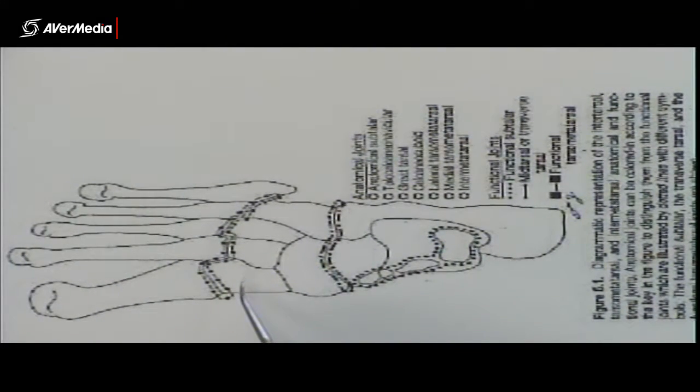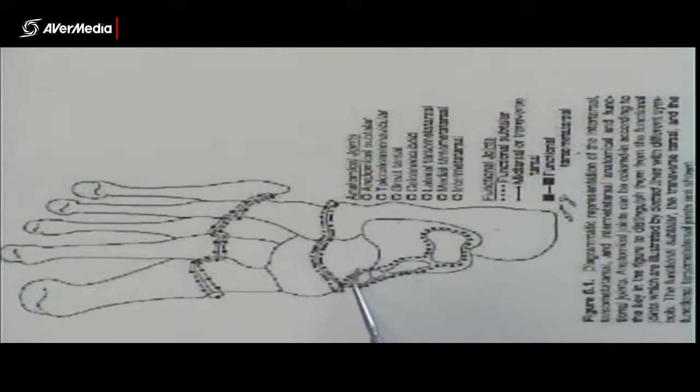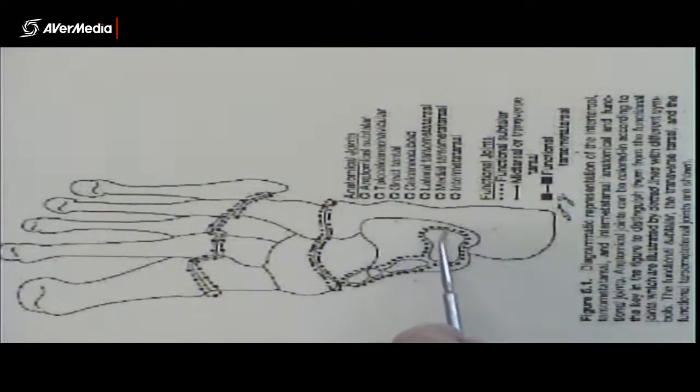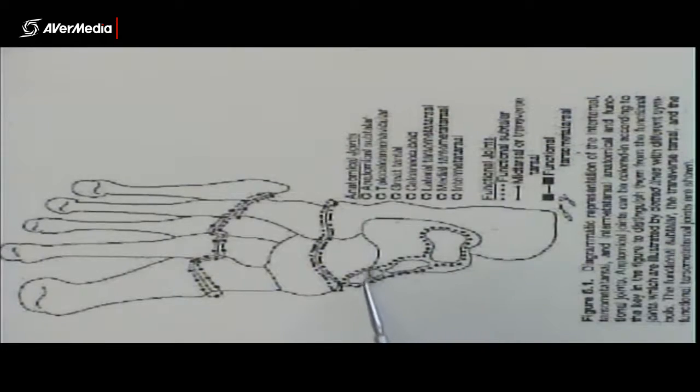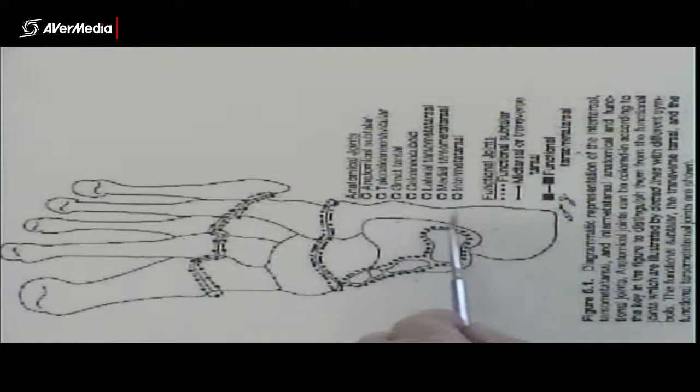So then we have the cuneiforms and the cuboid. We have the navicular here. Now this is the neck of the talus. And then this line here, going around here, shows you the trochlear surface. So that's the trochlear of the talus all inside that unbroken line. And then this is the calcaneus.